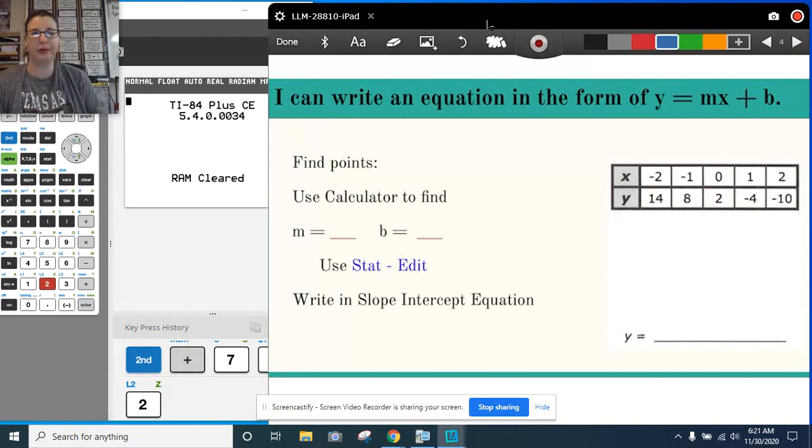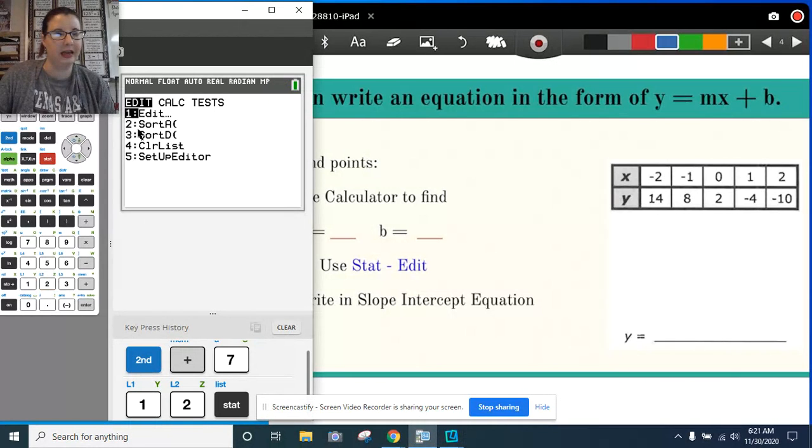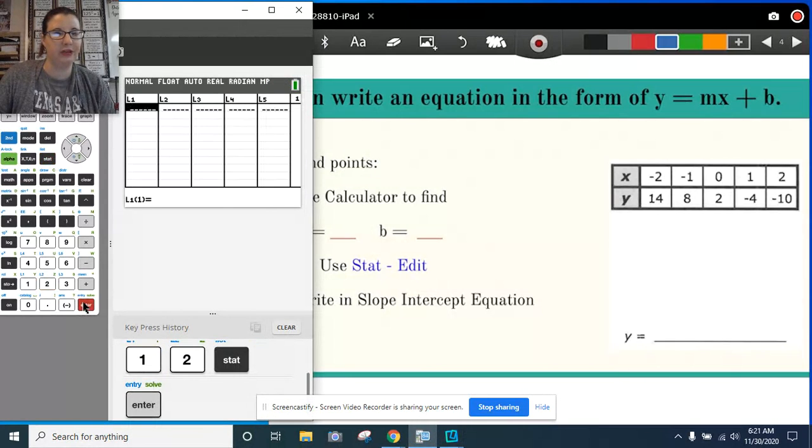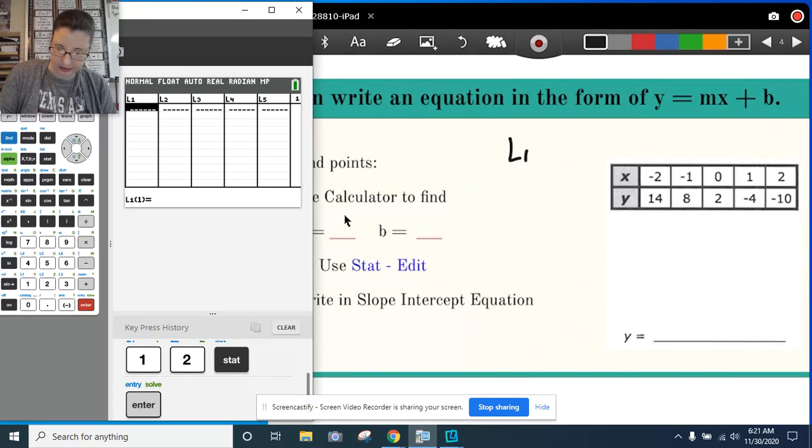We've got an example using a table. We have to use stat edit to figure out our m and our b. Now I'm going to enter this into my calculator. I'm going to hit the button. My memory's been cleared. So stats, and I want edits to enter my information. And I need to remember that L1 are all my x's, and L2 are my y's.